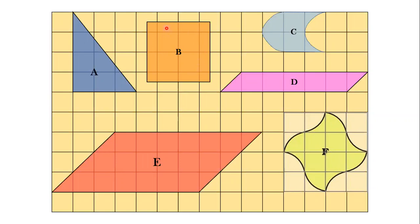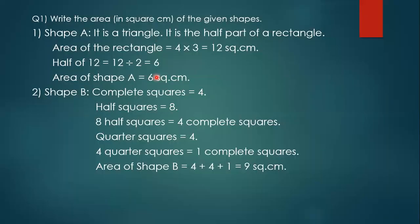Not only that, in the corners you can see quarter squares. Quarter means one-fourth of an object. There are 4 quarter squares, and 4 quarter squares will make 1 complete square. So to summarize shape B: complete squares are 4, half squares are 8 (which makes 4 complete squares), and quarter squares are 4 (which makes 1 complete square). Total area of shape B is 4 + 4 + 1 = 9 square centimeters.